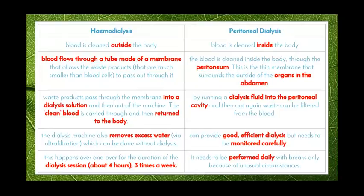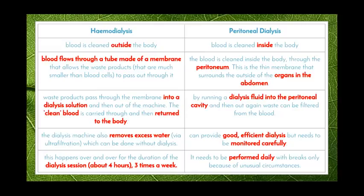There are two types of dialysis. The first is hemodialysis, where blood is cleaned outside of the body. While the person is hooked up to a machine, blood flows through a tube made of a membrane that allows the smaller waste products to pass through into a dialysis solution and then out of the machine, while the clean blood is returned to the body. The dialysis machine also removes excess water via ultrafiltration. Hemodialysis is repeated throughout each session, which goes for about four hours approximately three times a week — quite an intense process, but it helps reduce toxins and allows a person to live a fairly normal life.